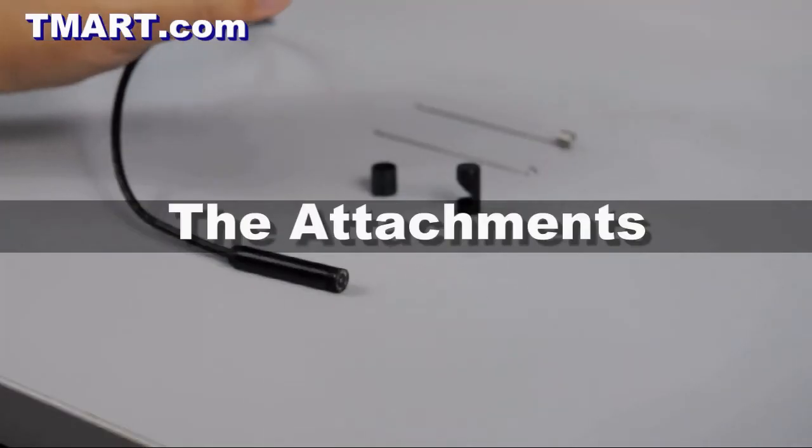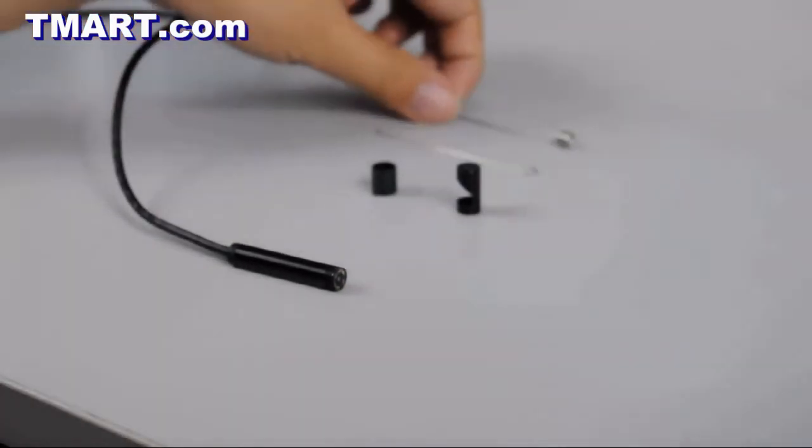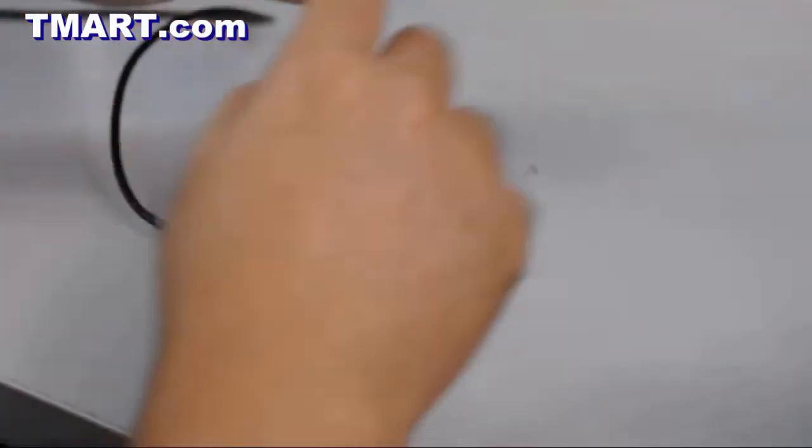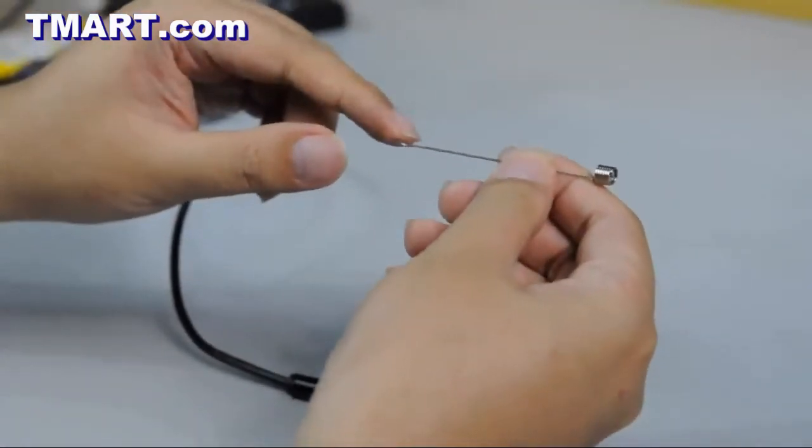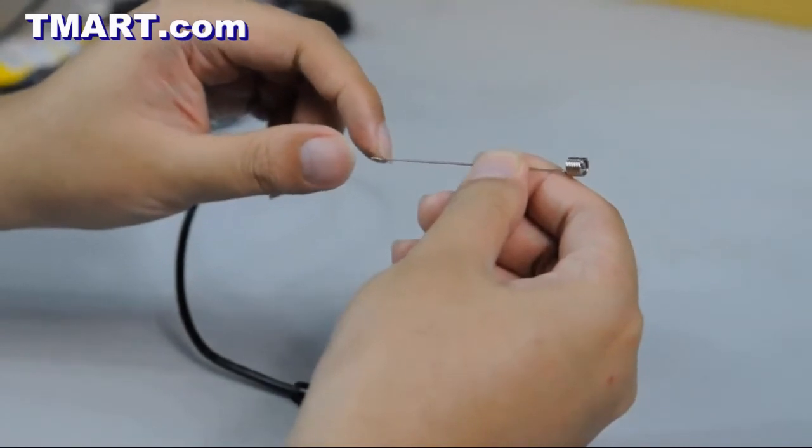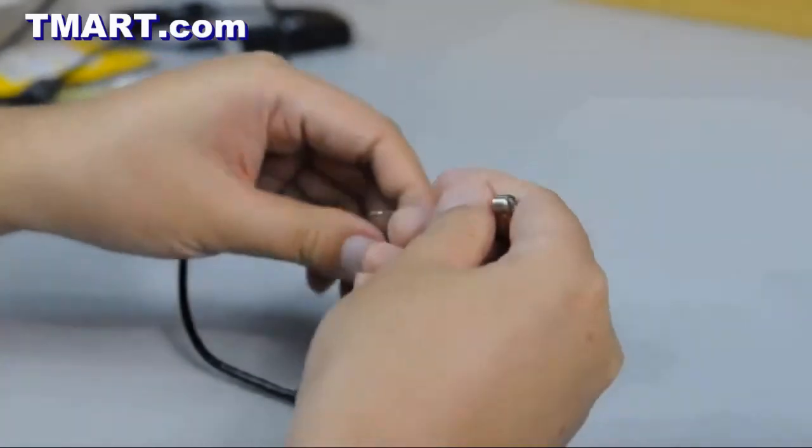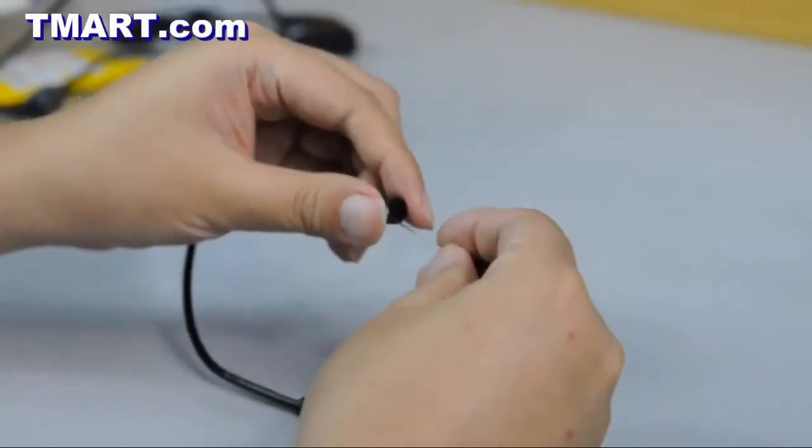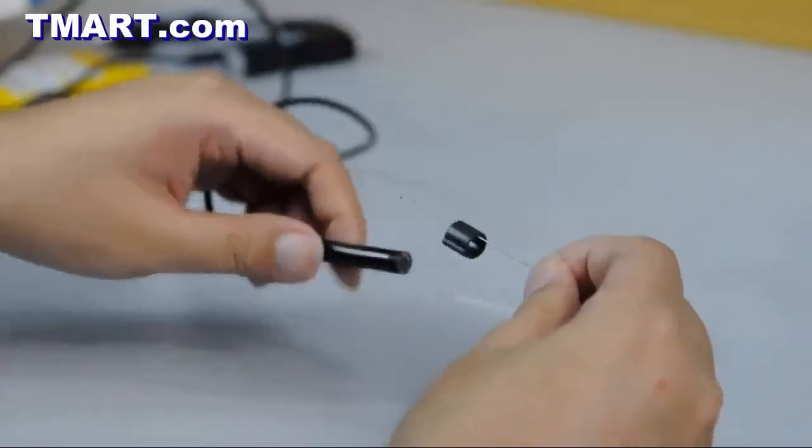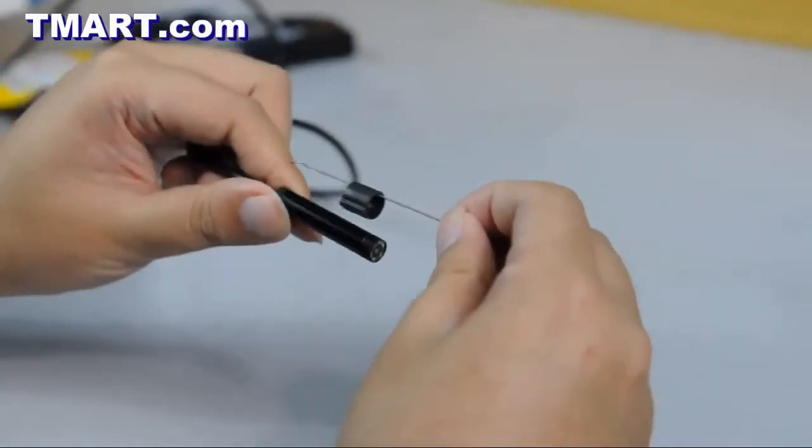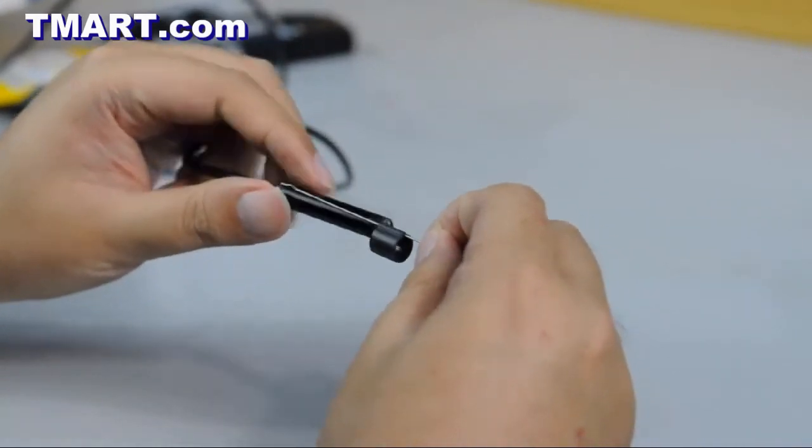So let me show you the attachments you get with this kit. Now over here, this metal rod. There's a magnet on one end, and there's a small hood on the other end. What you want to do is take the plastic sleeve, place it over the metal rod, and place the end on the camera, where there's a little hole. Place it like this.